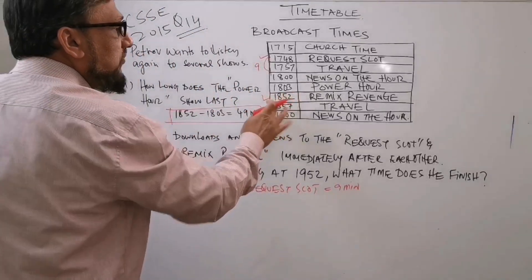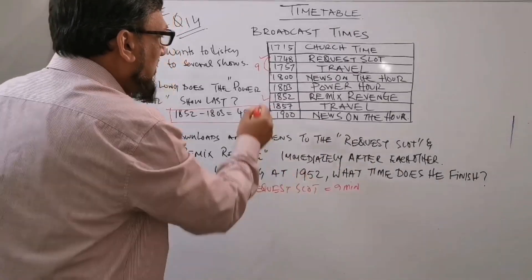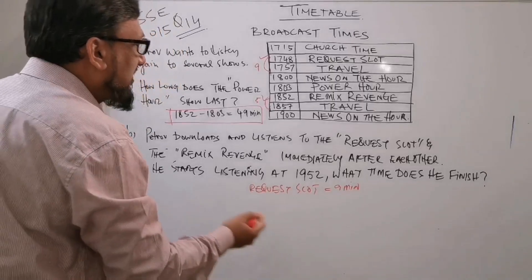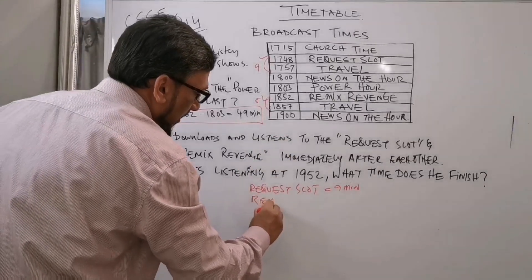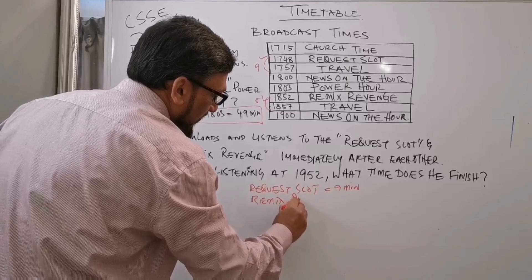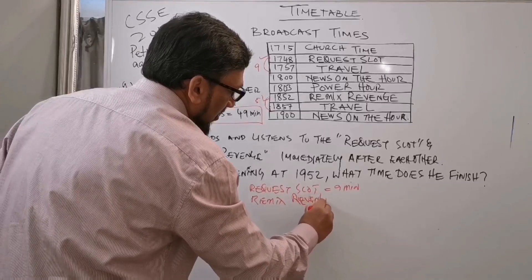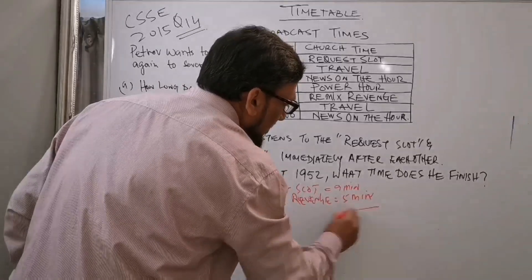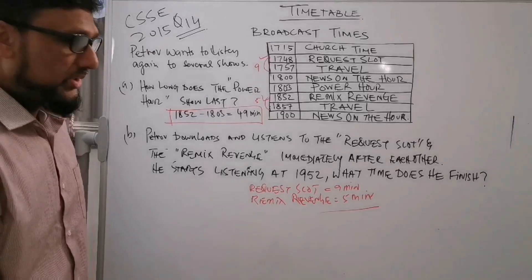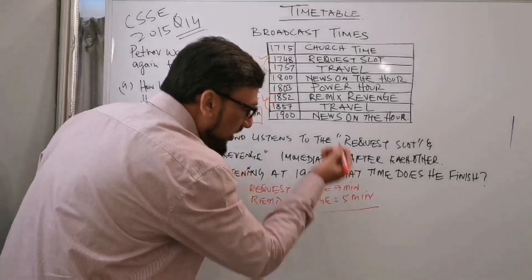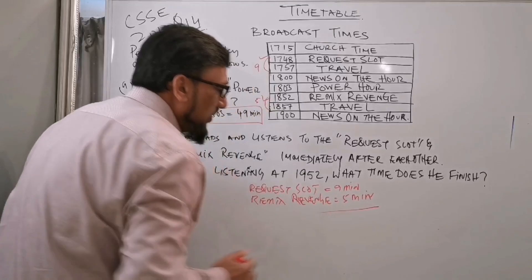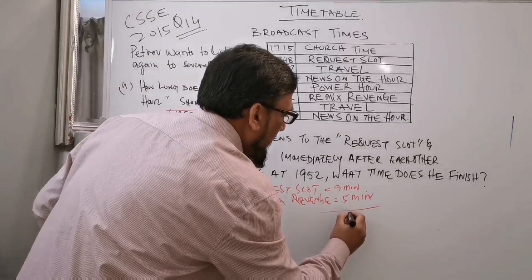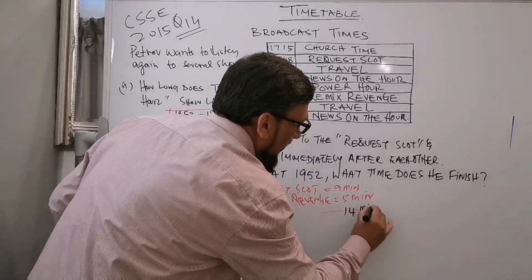And the Remix Revenge starts at 1852 and finishes at 1857, so that means from 52 to 57 — it means only five minutes. So Remix Revenge lasts only five minutes. So the total duration for these two programs is 14 minutes.